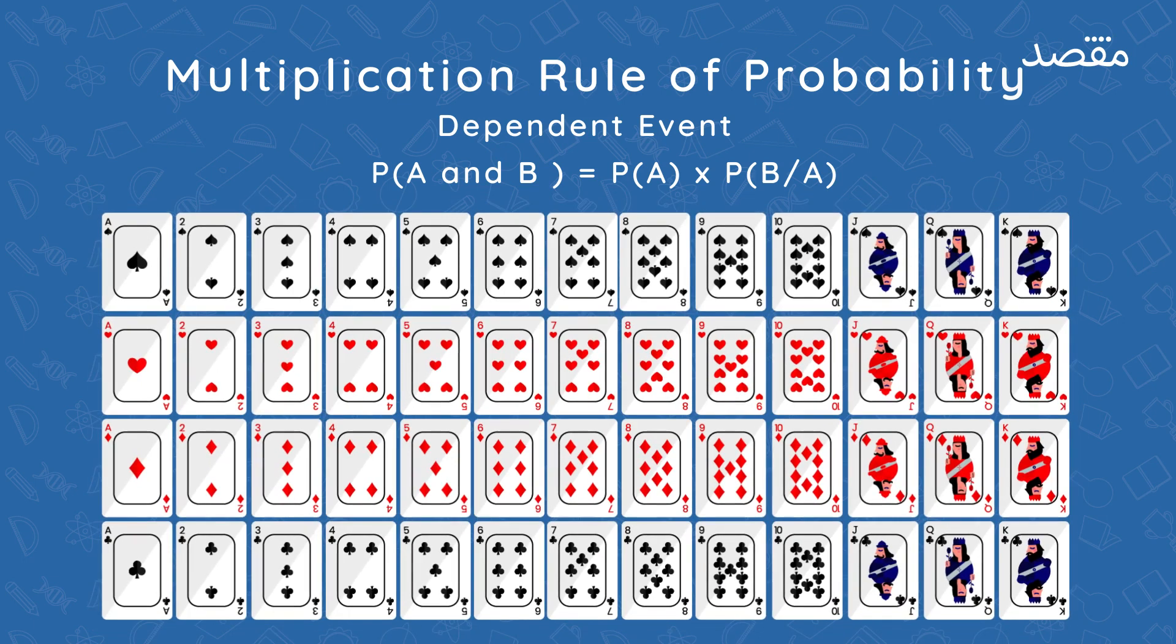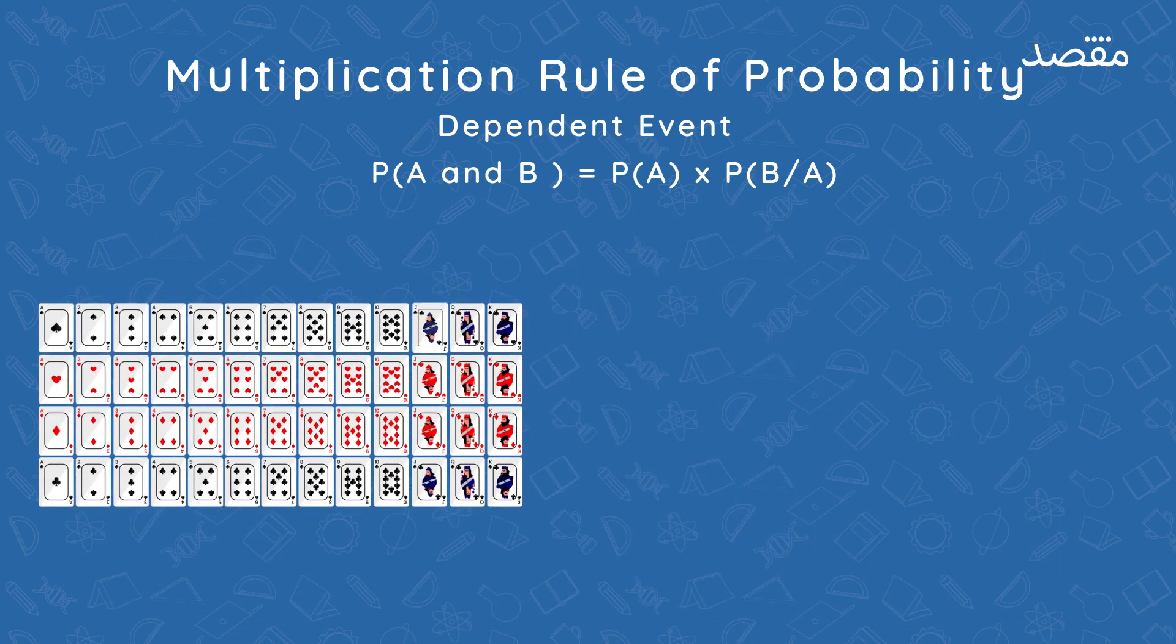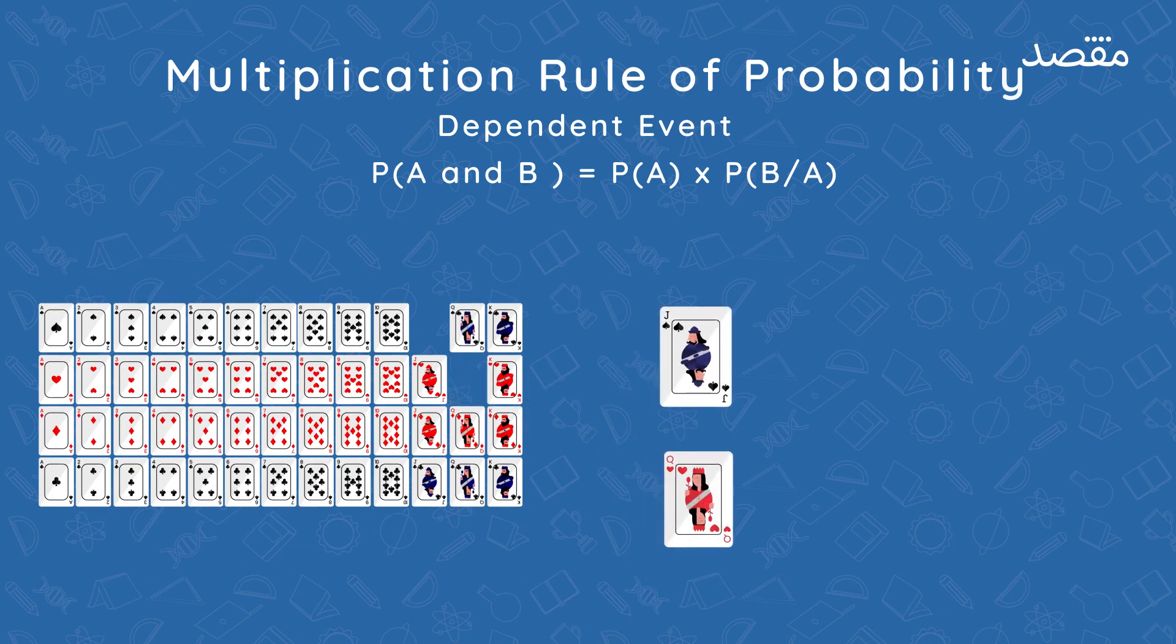For example, what's the probability that you'll pick a jack and then pick a queen? We'll start with the probability of drawing a jack, four out of 52 cards. Then we'll need to calculate the probability of drawing a queen given that we've already drawn a jack. There are four queens left in the deck and there are 51 cards remaining.